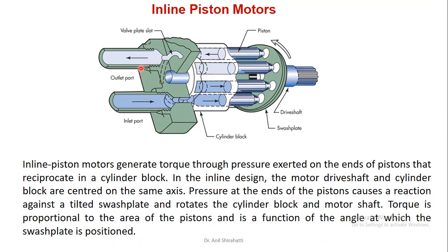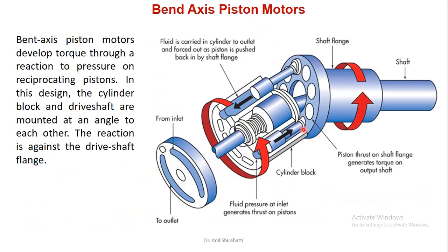You can see the outlet port, inlet port, the pistons, the drive shaft, and the swash plate in the diagram. There are two types of piston motors — the first is the inline type, and the second is the bent-axis piston motor. The difference is that the axes are not collinear; they intersect at an angle. A bent-axis motor develops torque through a reaction to pressure in the reciprocating pistons. In this design, the cylinder block and drive shafts are mounted at an angle to each other and the reaction is against the drive shaft flange.